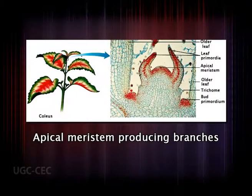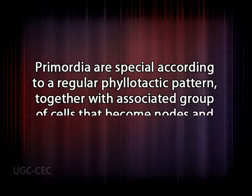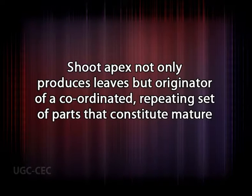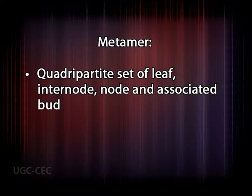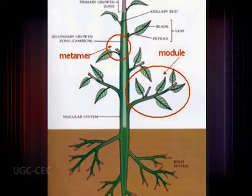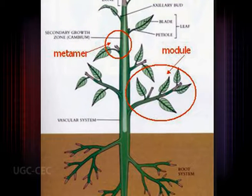Regarding modular growth of the shoot system: the shoot apex of higher plants is a meristematic zone associated with the production of leaf primordia arranged according to a regular phyllotactic pattern, together with associated groups of cells that become nodes and internodes. The nodes have buds in the axils of the leaves. The shoot apex not only produces leaves but is the originator of a coordinated and repeating set of parts. This quadripartite set of leaf, internode, node, and associated bud is called a metamer — a unit of shoot construction.